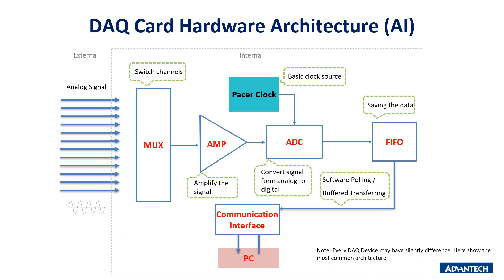The DAQ device hardware architecture for analog input has five main parts. The most important is the ADC — it is like the heart of the DAQ card architecture and is used to convert analog signals to digital signals. Going back to the first part, the MUX (multiplexer) is used to switch channels. After the multiplexer, the signal is amplified through the AMP component, then transferred to the ADC for conversion. There is also FIFO and a communication interface before the signal is transferred to the PC.